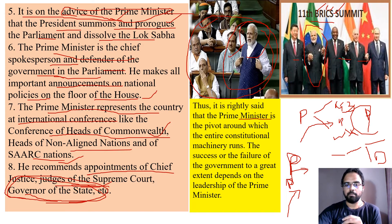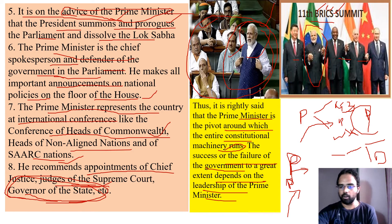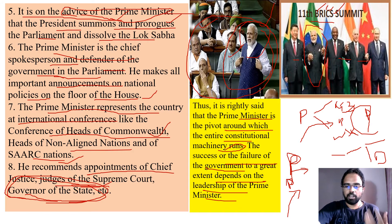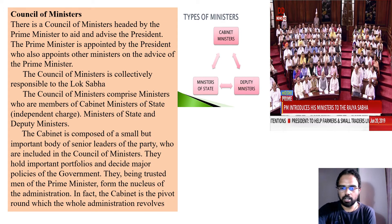By looking at all these powers, one can understand that the prime minister is the key person around which the entire constitutional machinery runs. The success or failure of the government depends on the leadership of the prime minister — if wrong decisions are taken, the entire cabinet bears the consequences, and if good decisions are taken, all share the fame equally.